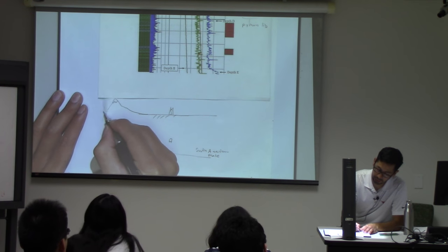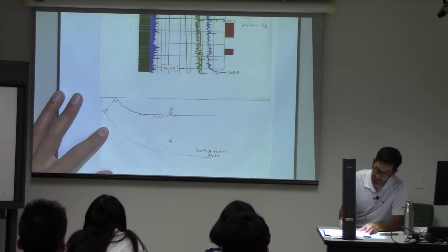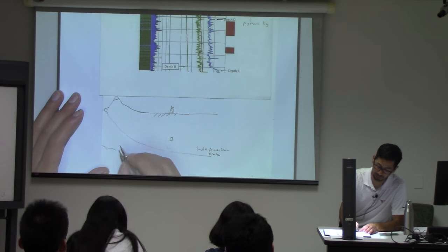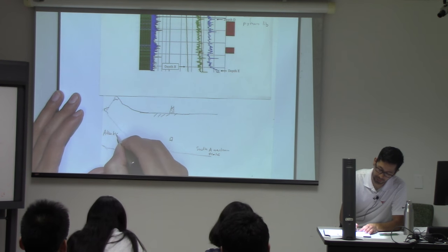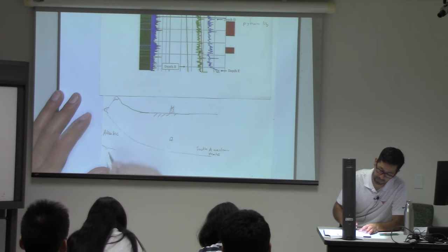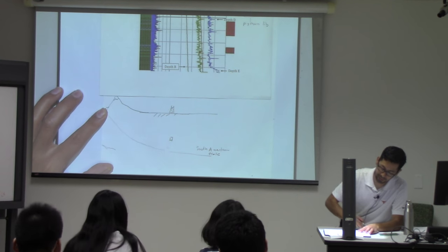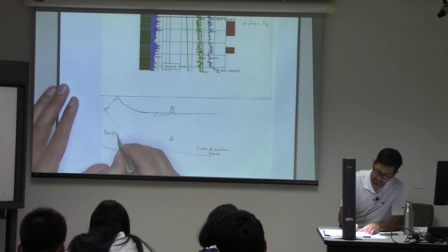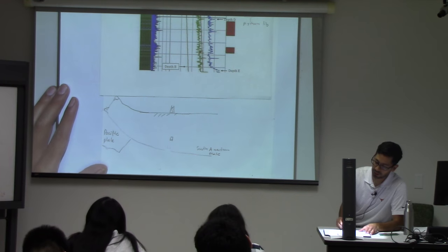And somewhere over here, Chile is somewhere over here — a very narrow country and very nice, especially if you go to Patagonia to the south, it's very beautiful. And this is going to be the Pacific plate — sorry, I always get those confused. So this is the Pacific plate that is going underneath the South American plate.